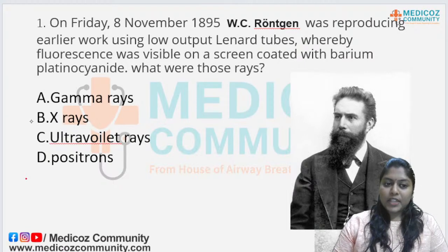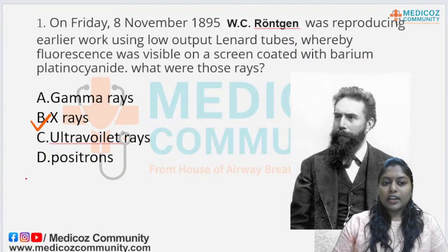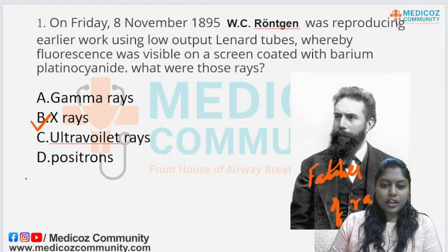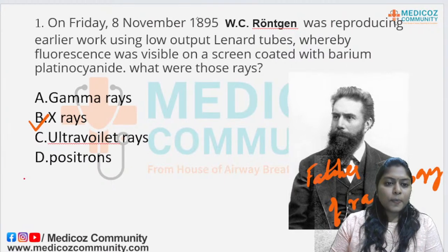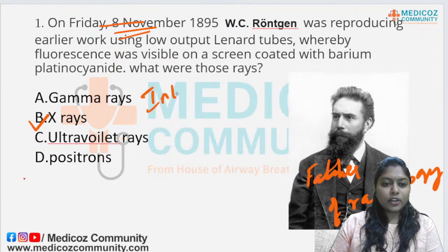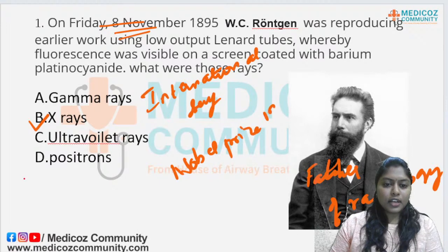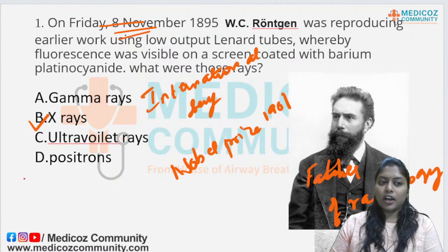The answer is X-rays. He named them X-rays because the source was unknown and he used X as a variable. W.C. Roentgen is the father of radiology. He made this discovery on 8th November, which is the International Day of Radiology, and he received a Nobel Prize for it in 1901. All three of these facts are important.